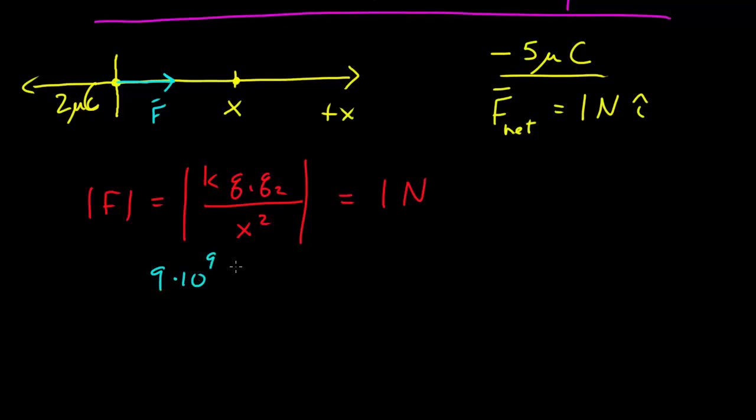My charges, and this is magnitude, so I just need all the positive values. I have 2 times 10 to the negative 6 microcoulombs, I have 5 times 10 to the negative 6 microcoulombs, all divided by x squared is equal to 1.